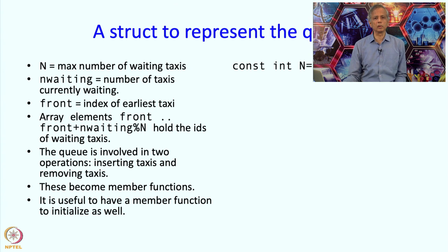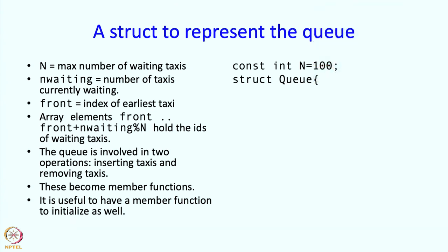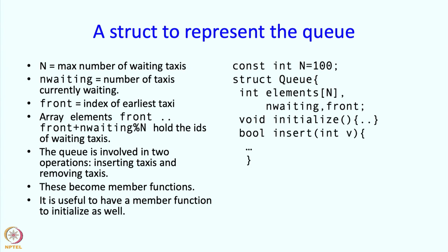Here is what the queue might look like. We have const int N equal to 100. Then we have an array elements which are going to store the driver IDs of length N, and then variables n waiting and front. These are our three member functions.